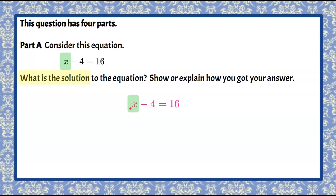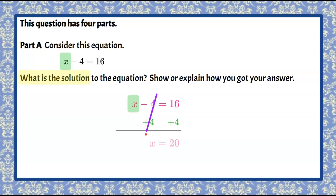The first thing we want to do is isolate that variable term — get it all alone — by doing the inverse of subtract 4. What we do to one side, we must do to the other to keep equality. The inverse of subtracting 4 is to add 4. Negative 4 and 4 are a zero pair — opposites with a sum of zero — leaving us with X plus zero, which is just X, and 16 plus 4 is 20.